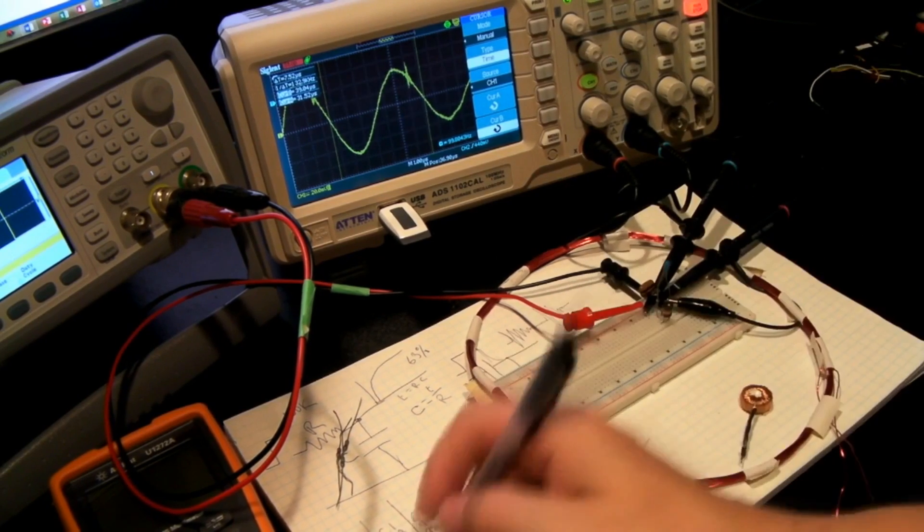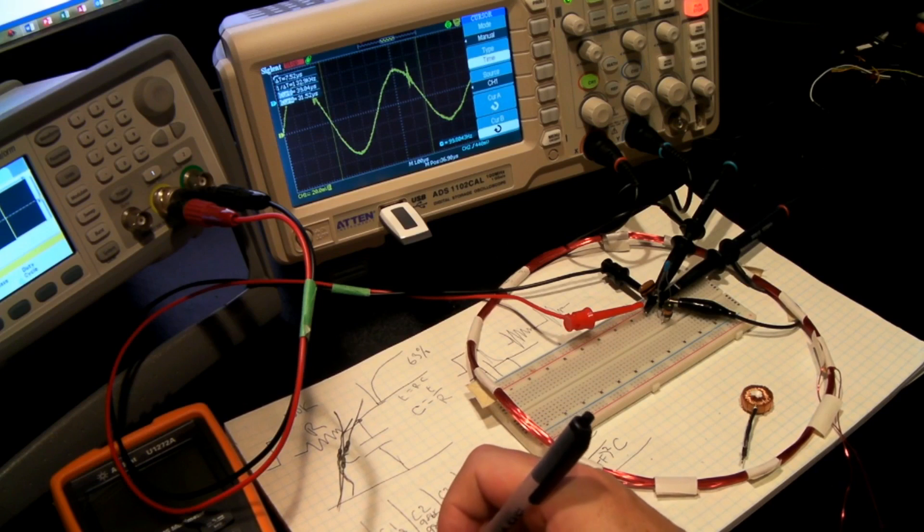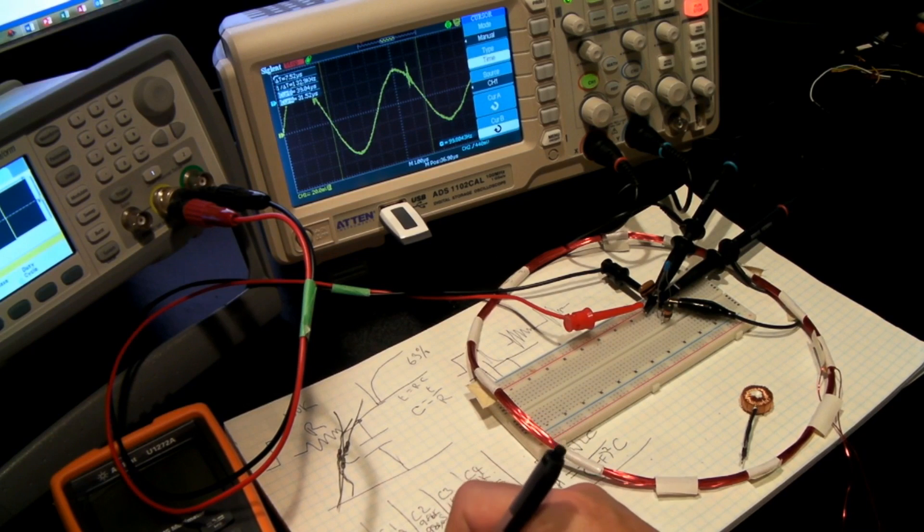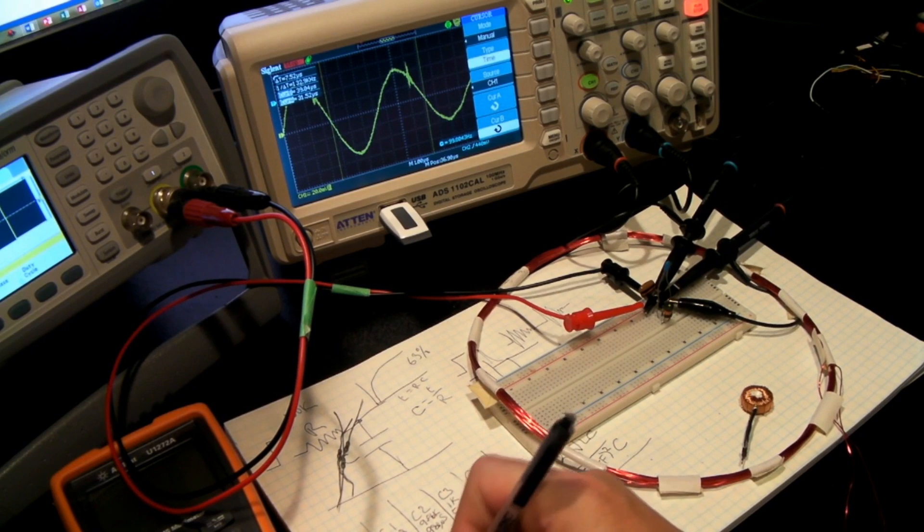And what we get is roughly 7.52 microseconds, which works out to be 132.9 kilohertz. So if we write this one down as L1, and we'll say it's 132.9 kilohertz, 132.9 kilohertz.